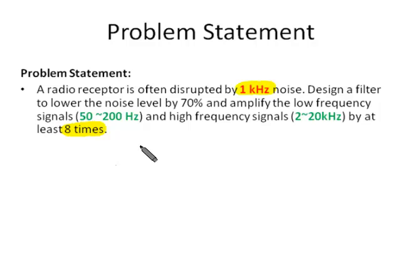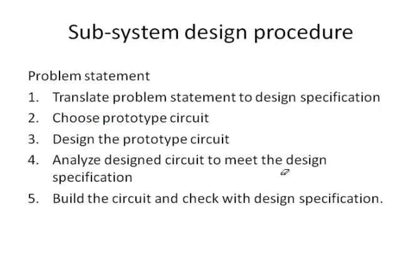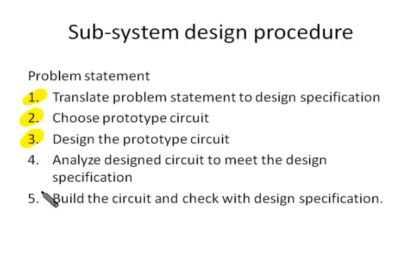Let's look at the subsystem design procedures suggested in our tutorial. Firstly, we need to translate the problem statement to design specification. Then choose a prototype circuit. When we design the prototype circuit, we need to specify all the component values in the circuit. Then we need to analyze the circuit theoretically to see if the design specifications match. The last part, we need to build the circuit and test it.